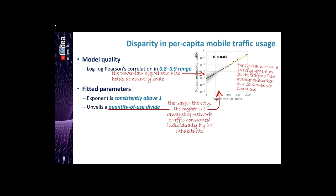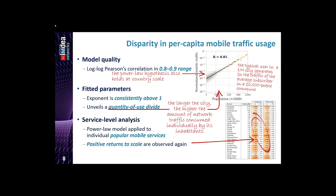For deeper analysis, we conducted experiments at each service level. We find there is an existence of imbalance in traffic at the service level as well — alpha is always greater than 1, but its value differs for different services. So there is a second level divide across different services, but with diverse intensity.